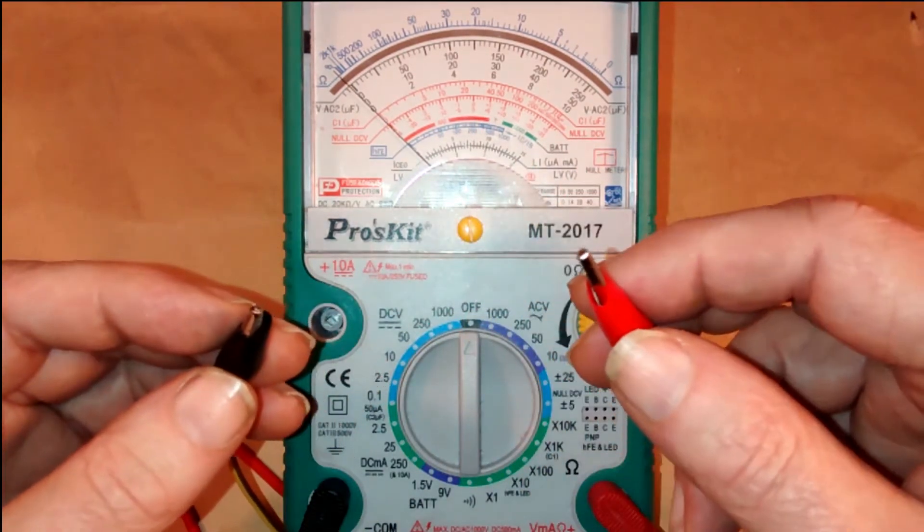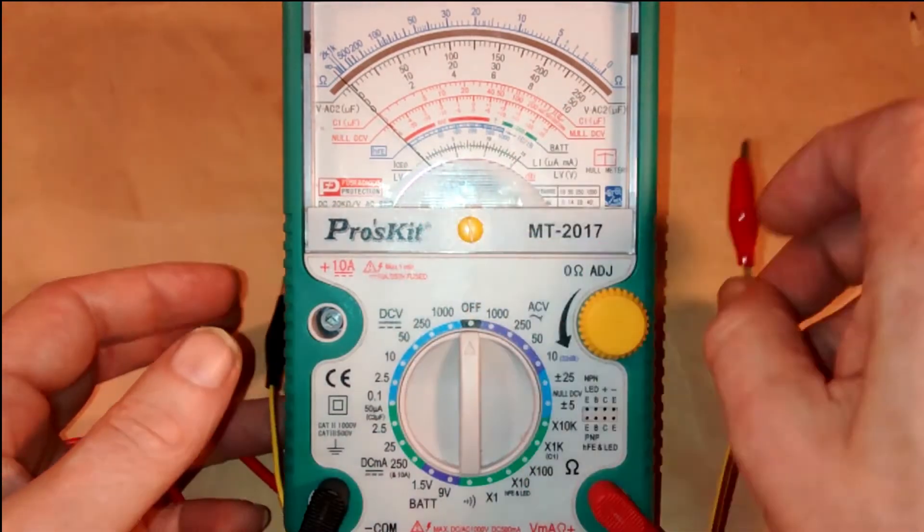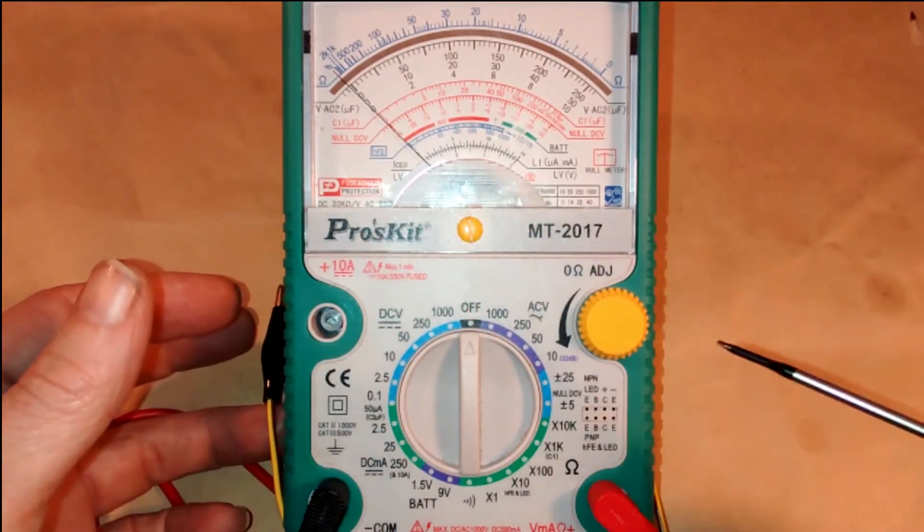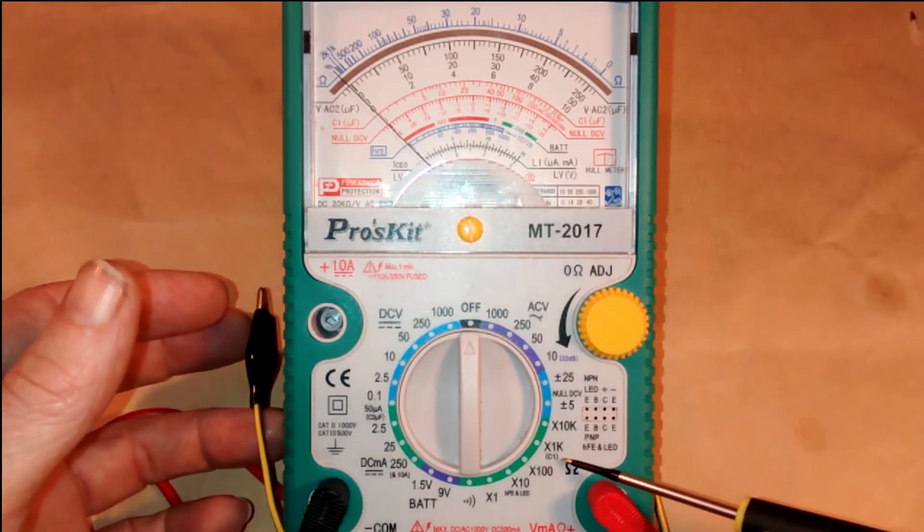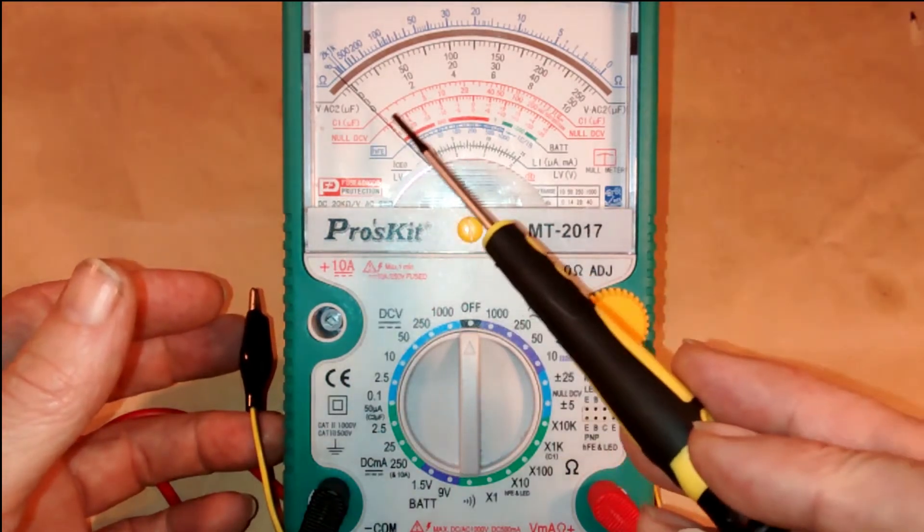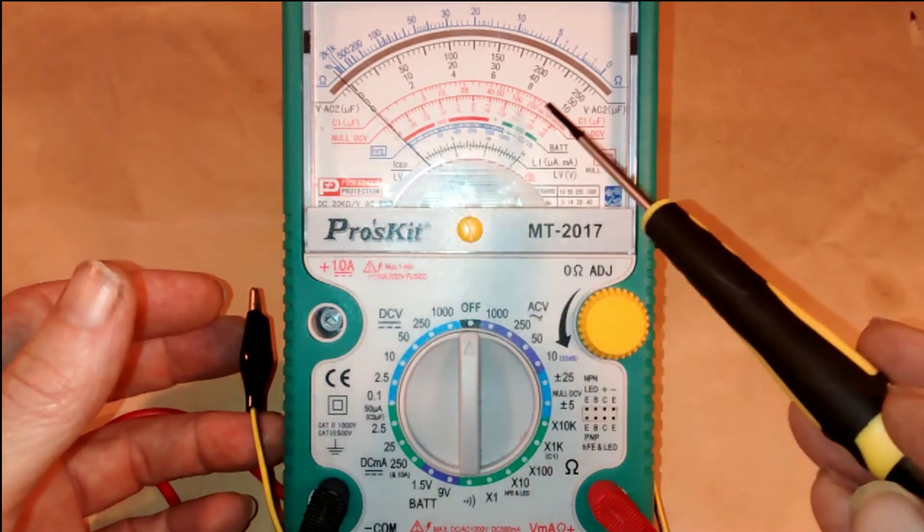Once you've connected the probes you need to turn the dial to the 1k ohm settings, and if you see underneath there's a little C1 in brackets which corresponds with the C1 scale on here.